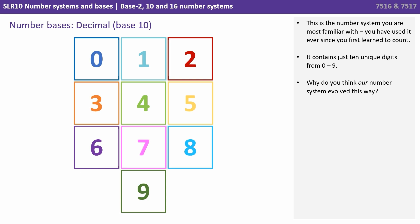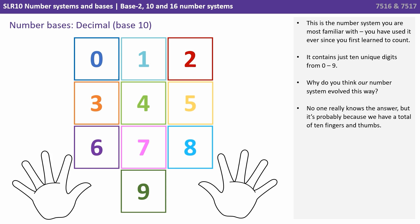It contains just 10 unique digits from 0 to 9. Why do you think our number system evolved in this way? Well no one actually really knows the answer, but it probably has something to do with the fact that we have a total of 10 fingers and thumbs.